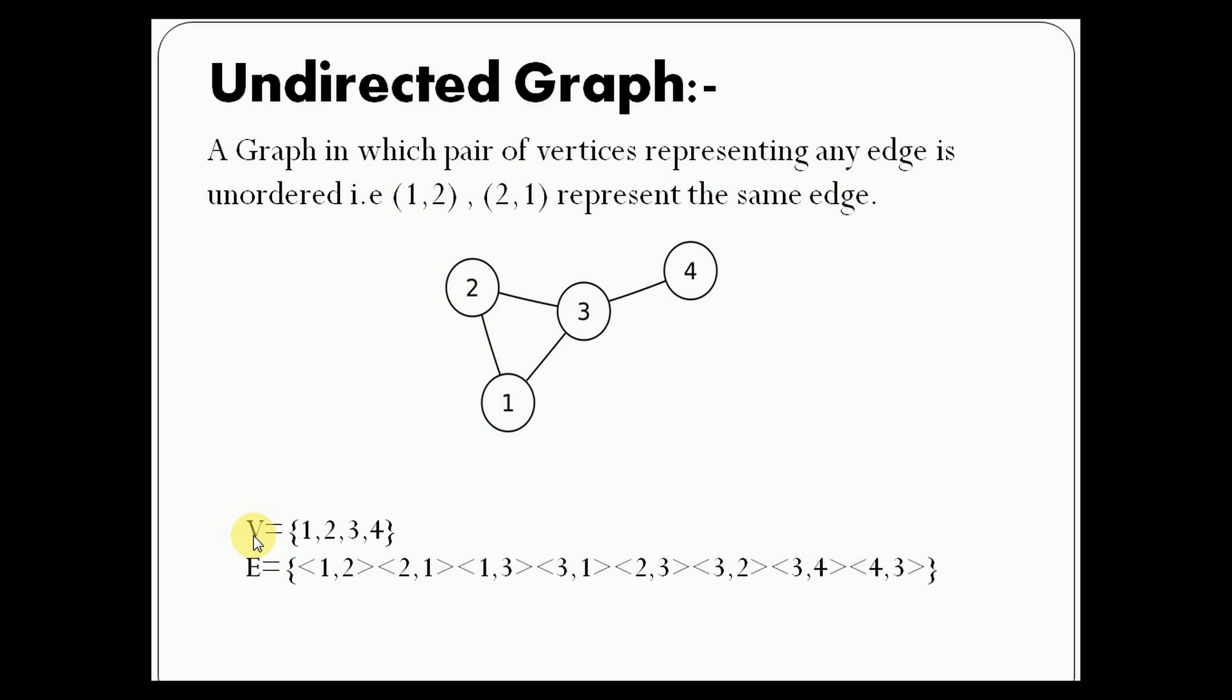Here the vertices are 1, 2, 3, 4 and edges like 1,2 is an edge, and 2,1 is the same edge represented both ways. It's unordered, there is no direction. It is called an undirected graph.